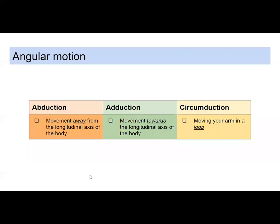Abduction means going away from the longitudinal axis of the body. If I take my arms and do a snow angel, moving my arms out, that is abduction — same with moving the legs out. If you bring arms or legs back toward the body, that is adduction. If you move your arms in a loop, that's circumduction. You may have seen hip abductor or adductor machines at the gym — that's what they're working.